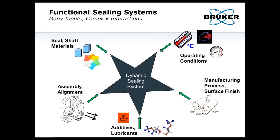First, I want to spend a little bit of time talking about a functional sealing system — one that might be present in an automobile, an electric motor, an engine, or an aircraft engine. Anytime there's a moving shaft surface that's either rotating or moving in a linear fashion, and a contacting radial seal meant to keep lubricant on one side and air or another fluid on the other side, these types of sealing systems are present all over in our lives today — in heating and cooling systems, automobiles, and transportation systems.